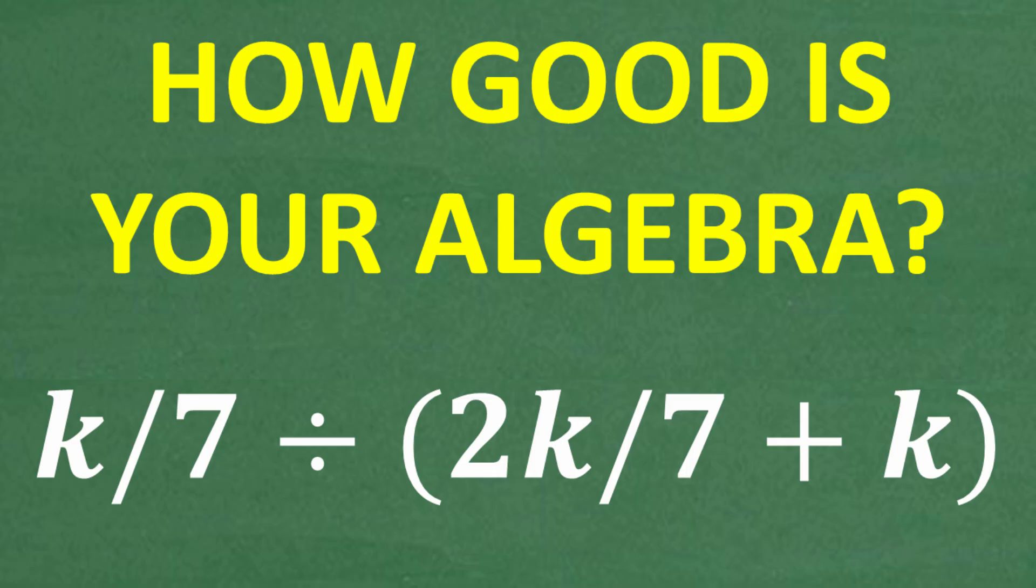But nevertheless, even if you've been away from math, algebra specifically for many years, I still think you could remember how to do a problem like this. This is not a difficult algebra problem. Matter of fact, let's go and take a look at it. It is k divided by 7 divided by parentheses 2k divided by 7 plus k in parentheses. We want to simplify this down to one value. So if you could figure this out, go ahead and put your answer into the comment section, and then we're going to go through the solution step by step.